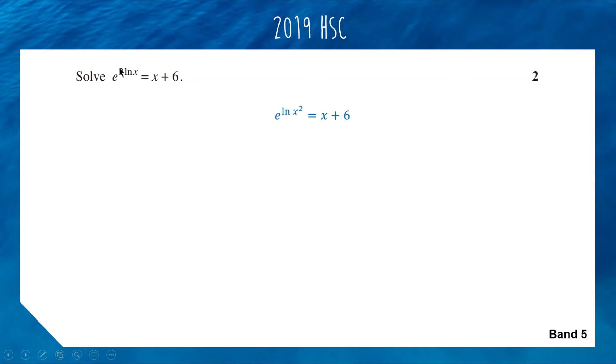A couple of tricks here to make this question much simpler. First thing we can do is the 2 in front of the log base e, we can use our reverse log rule to put that up into the power of x. So left hand side we write as e to the ln of x squared. The reason we did that is because now we have e to the log of something. Remember that e and log base e are inverse functions. When you do them both, they cancel each other out, and the left hand side turns into x squared.